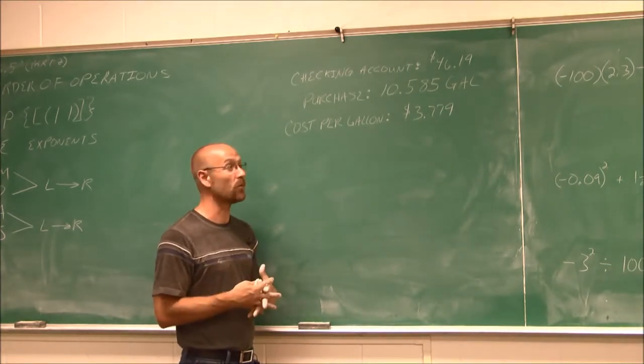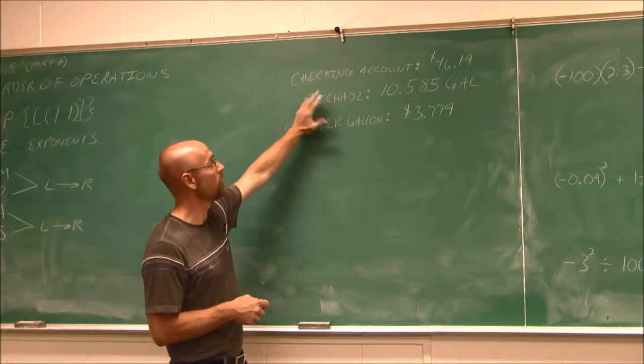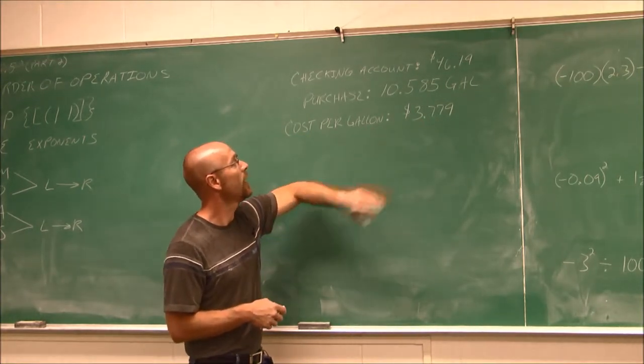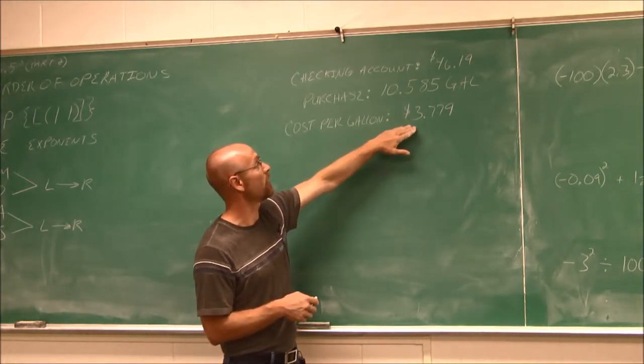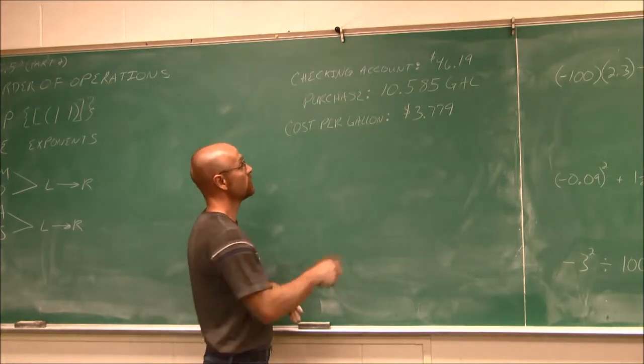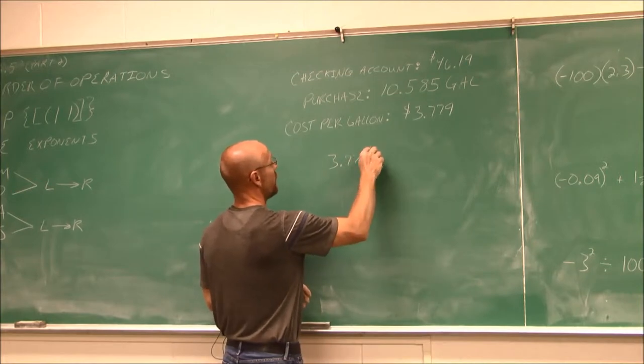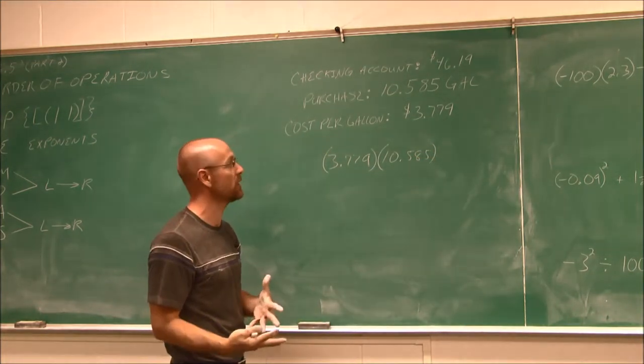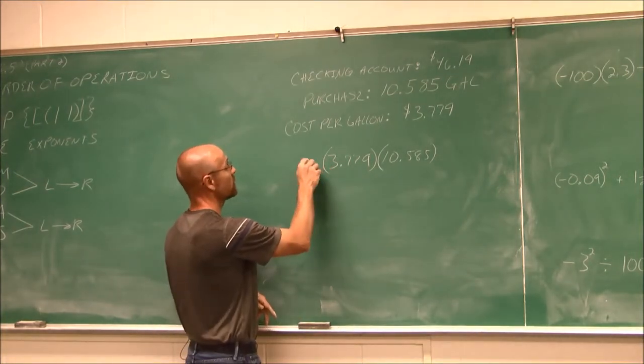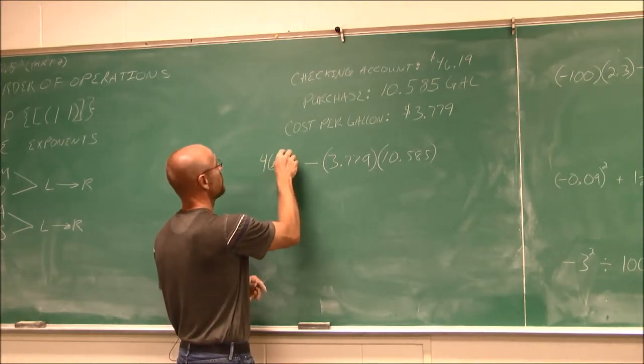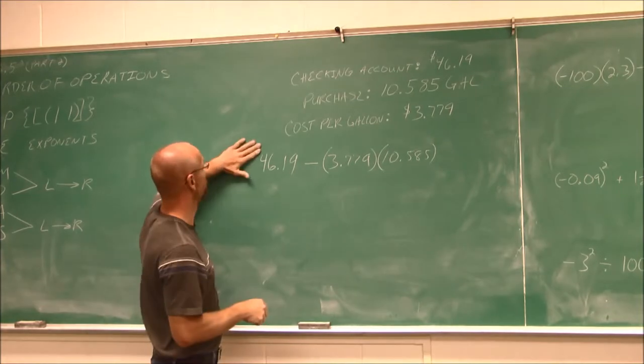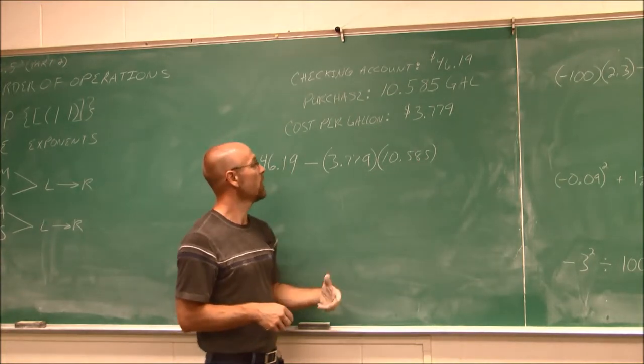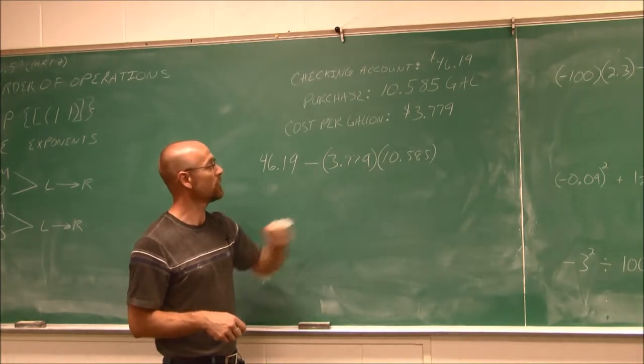In order to do this, we have to follow order of operations. How much did I pay for gas? I have a unit value for the gallons, cost per gallon. The unit price of gas is 3.779, and I know how many gallons I purchased. If we multiply the cost times the number of gallons, we'll have the total cost. So I have 3.779 times the number of gallons, 10.585.